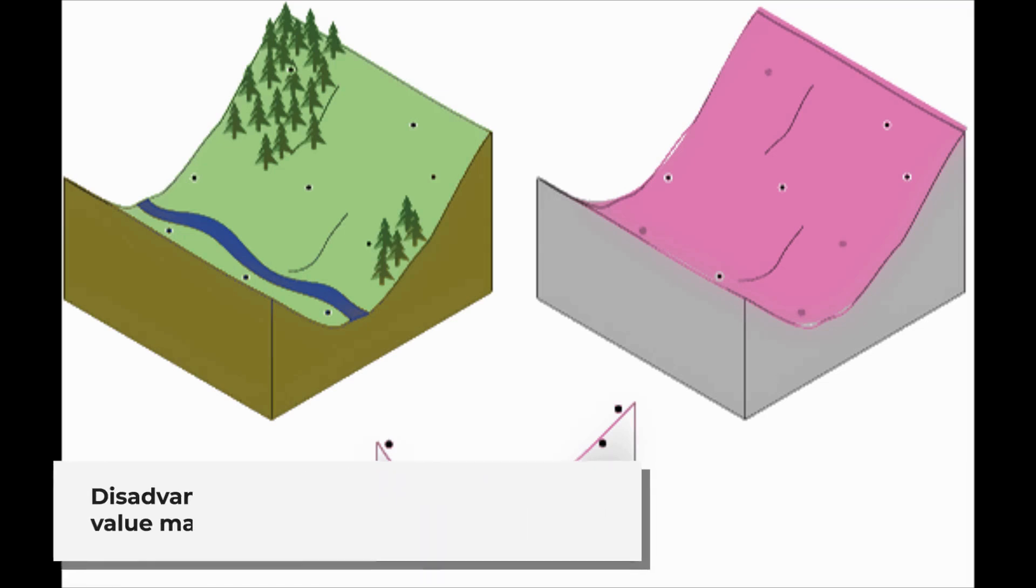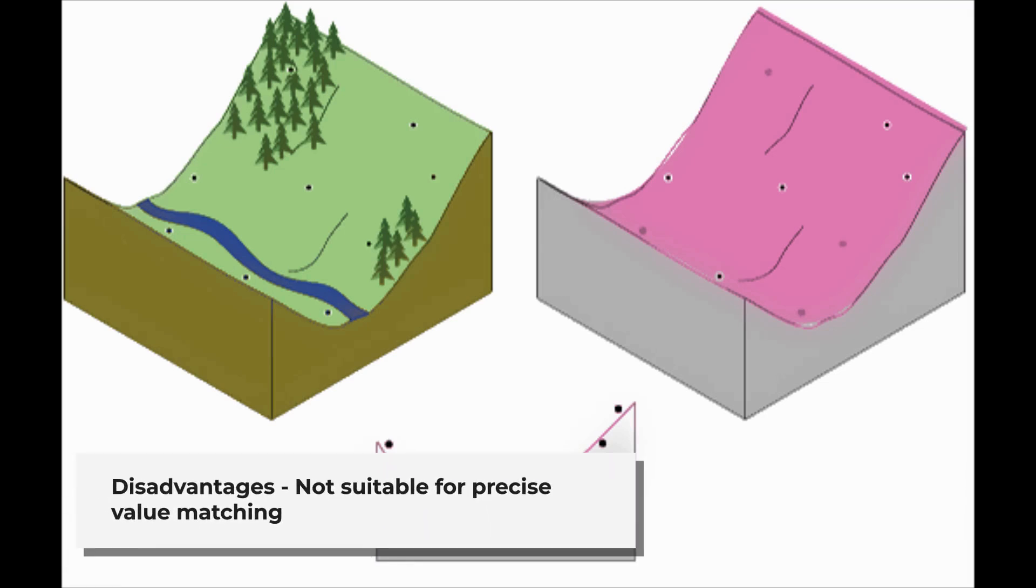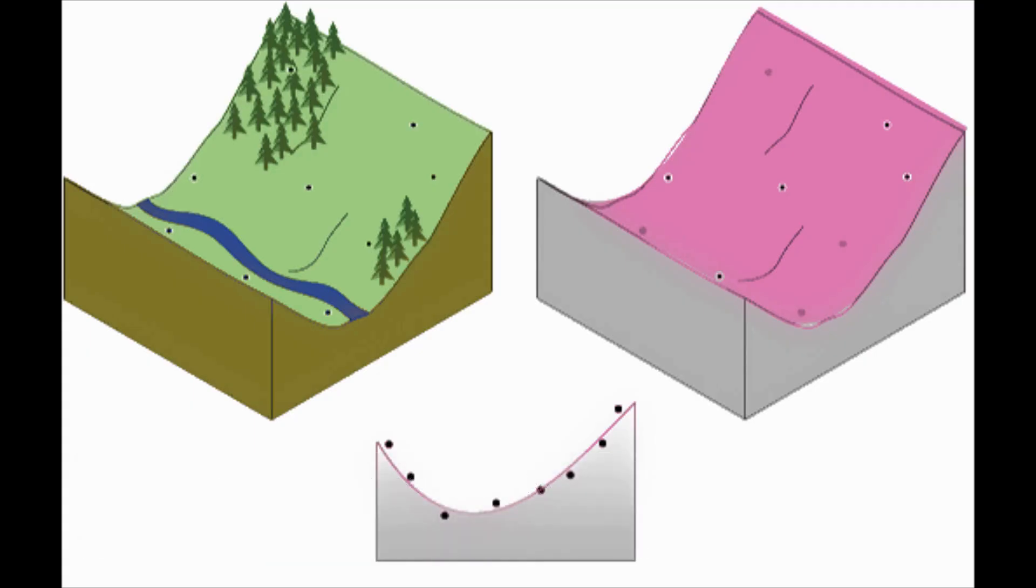Disadvantages of trend interpolation: If you need precise values, trend interpolation is not ideal, especially for detailed variations, since it doesn't match the sample points exactly.